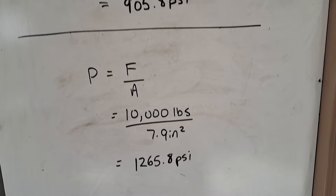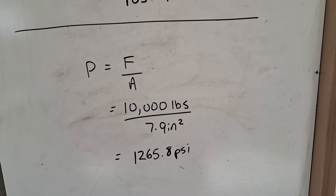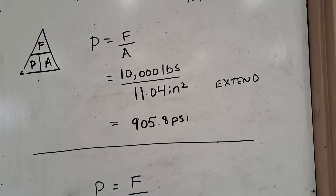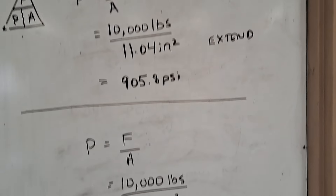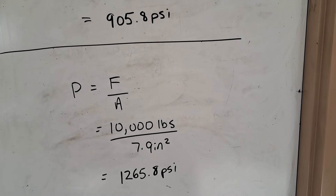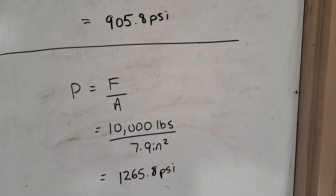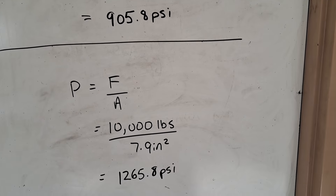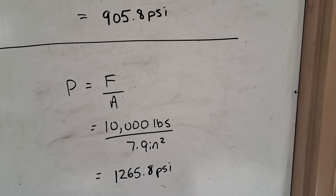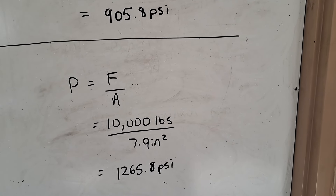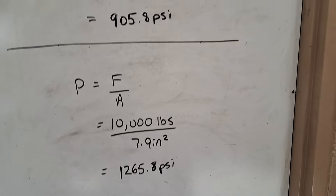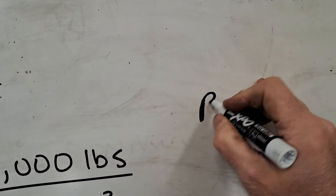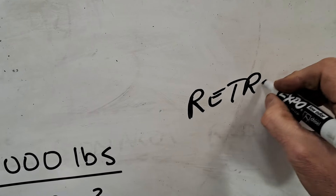So that's one way we can work Pascal's Law: if we want to know the pressure required to lift a certain load with a certain size double-acting cylinder, we can see the pressure required extending against that physical resistance and the pressure required retracting against that same load — demonstrating that extending requires 905 psi and retracting requires 1,265 psi for the same 10,000-pound load.